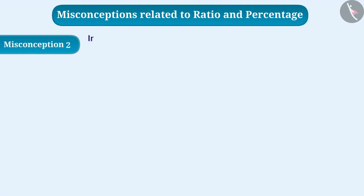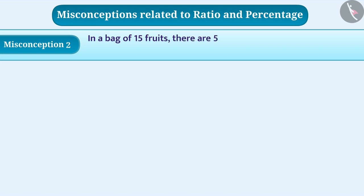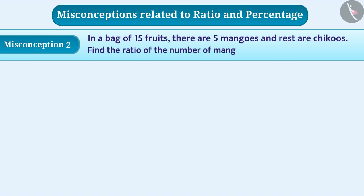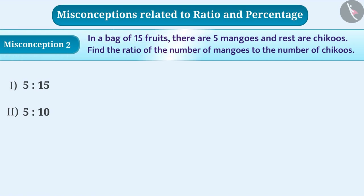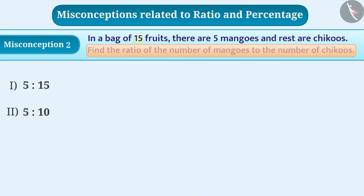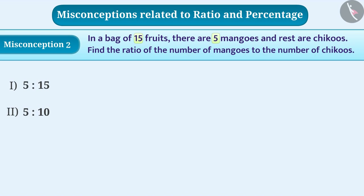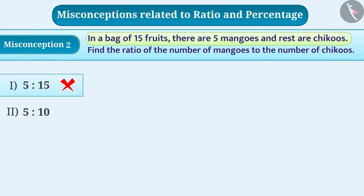Misconception 2: In a bag of 15 fruits there are 5 mangoes and the rest are chikus. Find the ratio of the number of mangoes to the number of chikus. Some children can't understand the given information and ignore what is to be found. They see the numbers 15 and 5 in the question and in option 1, and think option 1 is the right answer — which is wrong. We should read questions properly and understand what is given and what is to be found.